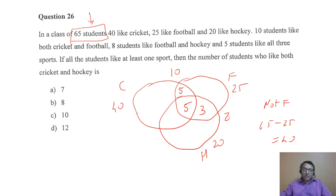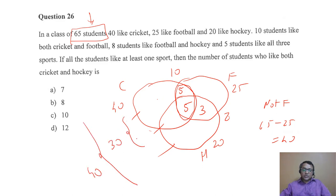5 students like all three sports, so the all-three region is 5. Cricket-and-football only = 10 − 5 = 5; football-and-hockey only = 8 − 5 = 3. Outside football (not football) = 40, which covers three parts. Cricket total is 40; those two shared parts together = 10, so remaining cricket = 30. Total not-football is 40, cricket-only part is 30, so hockey-only = 10. Since total hockey is 20, both-cricket-and-hockey = 20 − 10 = 2 (but wait, need to confirm with the final step).